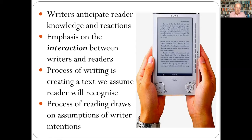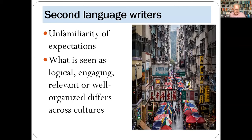A reader-oriented view emphasizes the interaction between writers and readers. Here, process means something different — the process of writing involves creating a text that the writer assumes the reader will recognize and expect, while the process of reading involves drawing on assumptions about what the writer is trying to do. This is called coherence in linguistics. Mike Hoey says it's like ballroom dancing, where each participant builds sense from a text by anticipating what the other person is trying to do. It's the unfamiliarity of these expectations that makes writing in English so difficult for second language speakers.